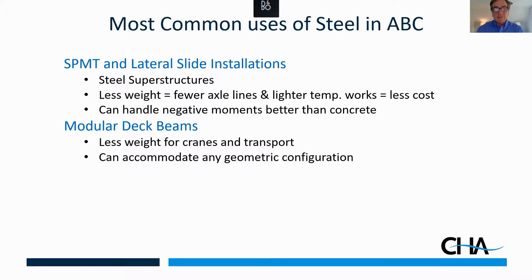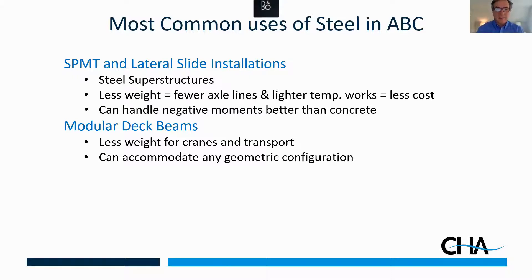The most common uses of steel in ABC involve SPMT or lateral slide installations. Steel is very popular because it's lighter than precast concrete — fewer axle lines for SPMTs and lighter temporary works for lateral slides. It can handle negative moments when you lift and place it. Steel is a very versatile material for ABC, often overlooked, but in the Northeast, steel ABC projects are very common. Modular deck beams are especially popular there, and we're seeing more use across the country. The lighter weight means less crane capacity is needed, which is often the controlling factor when site conditions limit crane size.